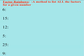Factor rainbows. Factor rainbows are methods used to list all the factors for a given number. It's a systematic way to identify all the factors.